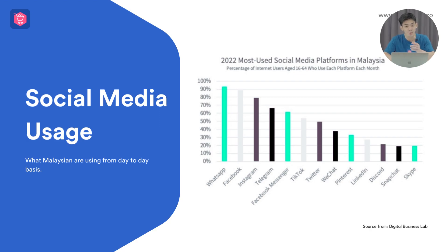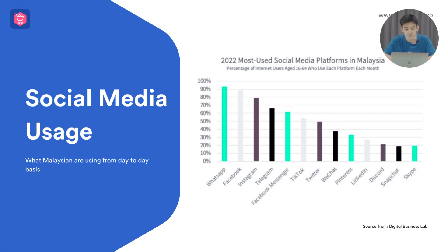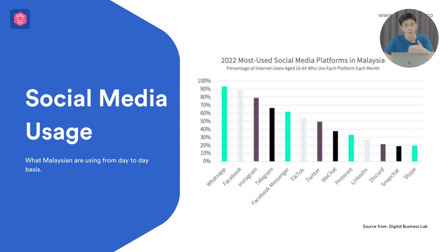When we talk about social media platforms and how businesses and individuals use them on an everyday basis, it's very interesting. If we look at these stats, the top four to five social media platforms in Malaysia are WhatsApp, Facebook, Instagram, Telegram, and TikTok. These statistics tell us that most people around us are using social media most of the time on their mobile phones.